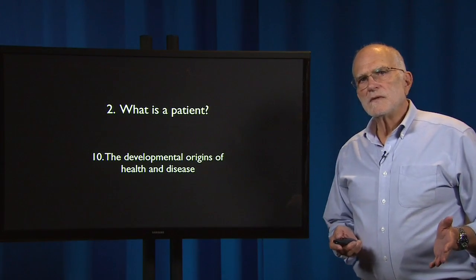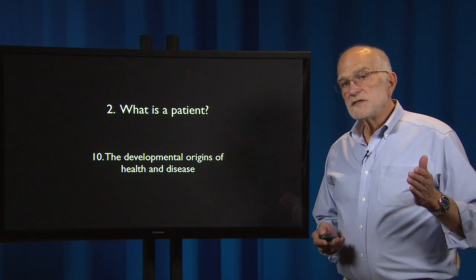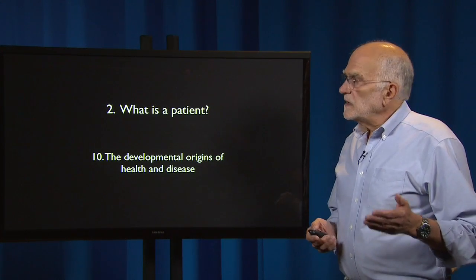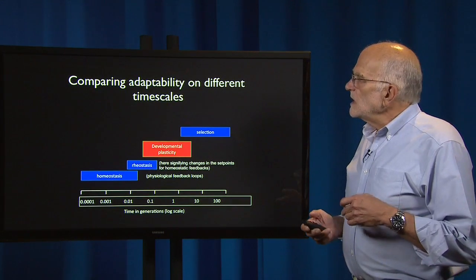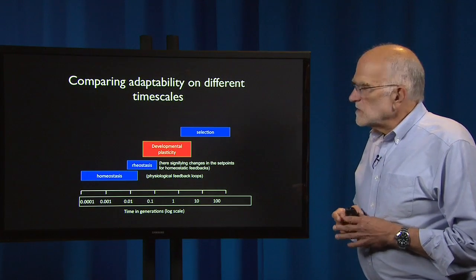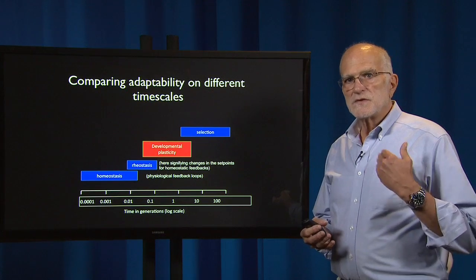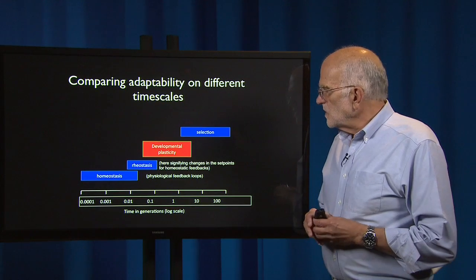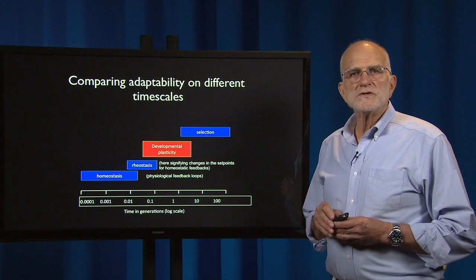Another way to look at a patient is as an organism that develops and which has a sensitive period early in life where environment has a big impact. That takes us into the developmental origins of health and disease. If we look at adaptability on different time scales, we can see that the homeostatic mechanisms of physiology — doing things like controlling our temperature and our blood sugar — are operating on periods from about a ten-thousandth of a generation up to about a hundredth of a generation.